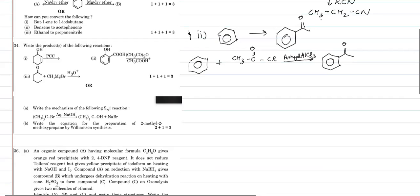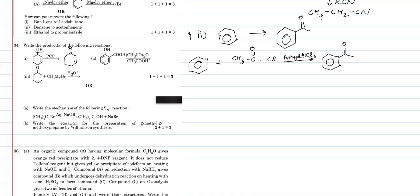Question number 34: write the products of these reactions. First: we have an alcohol reacting with PCC (pyridinium chlorochromate). The product is a ketone — the alcohol is oxidized to give a C=O group. PCC does not affect double bonds, so any existing double bond remains in the product.